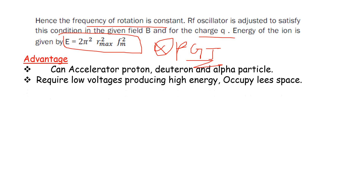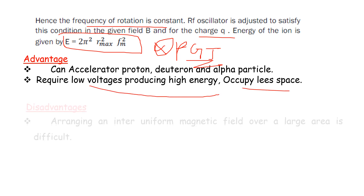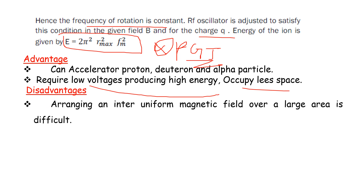Advantages of the cyclotron: it can accelerate protons, deuterons, and alpha particles. It requires only low voltage to produce high energy particles. It also occupies the least space.